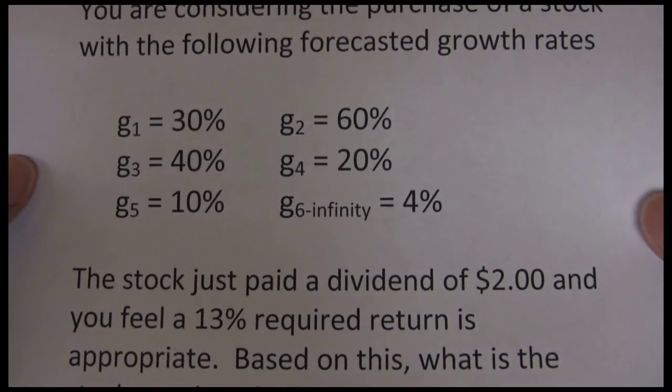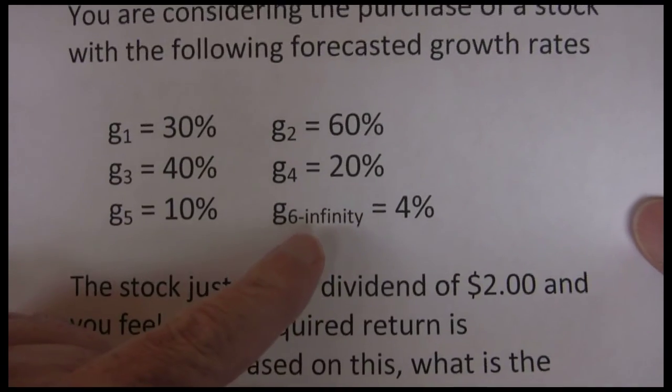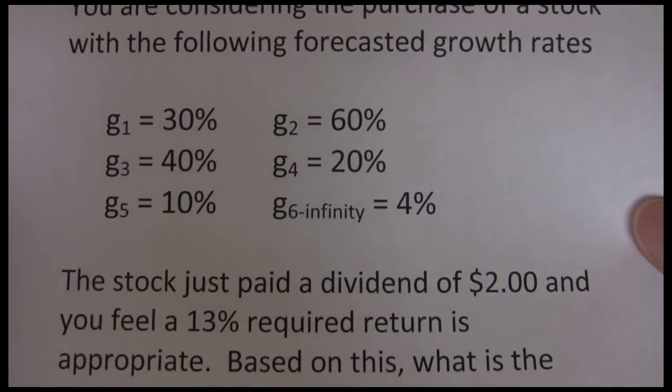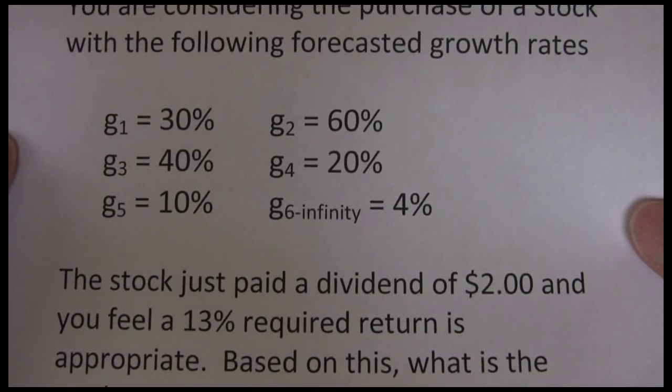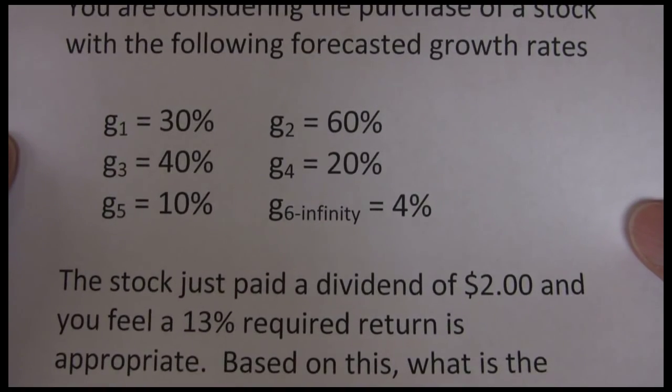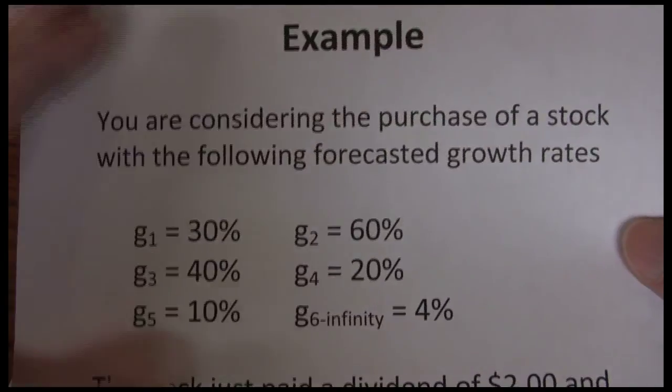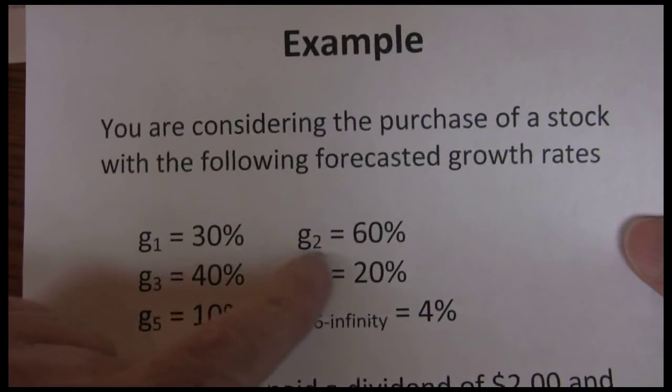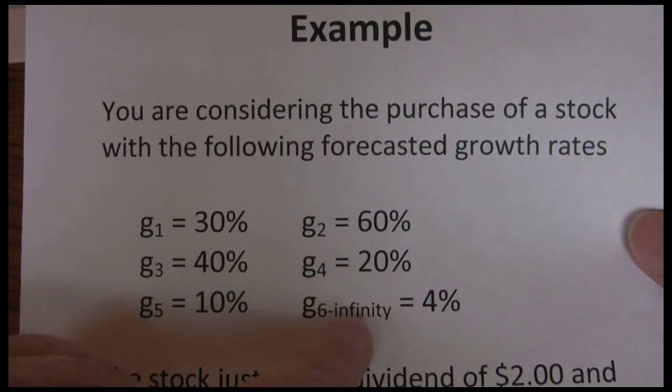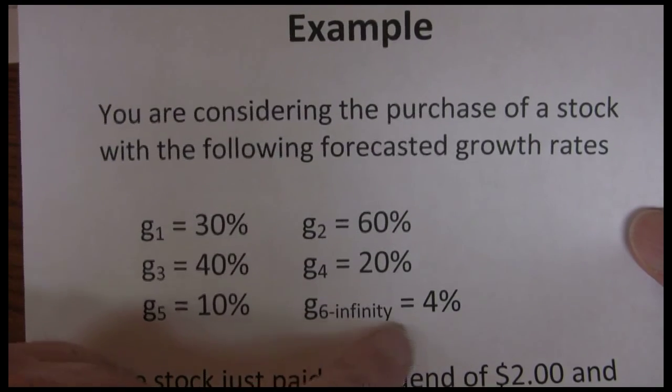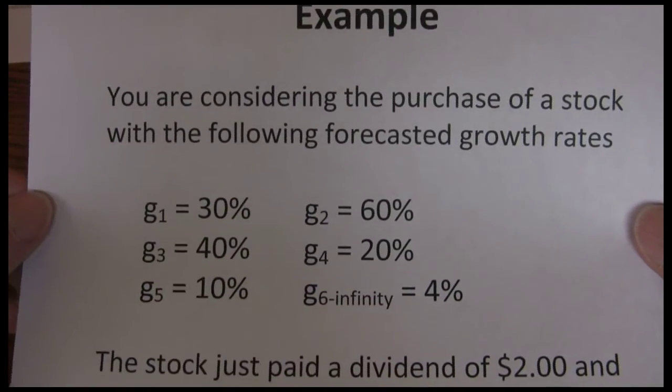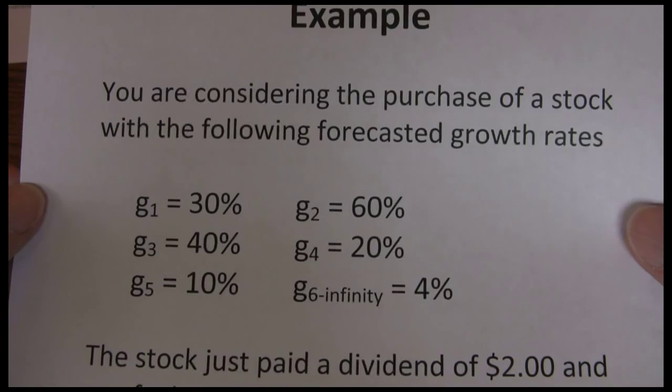Another thing I want to mention here is our growth rate assumption from year six to infinity at four percent. I said one of the problems of the constant growth model is it assumes a constant growth rate forever, that this non-constant model is much better because it allows us to have variable growth rates. Once we get out to year six we go back to the same problem. We assume growth rates are constant at four percent forever.